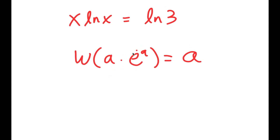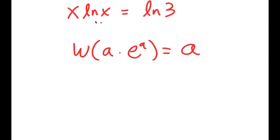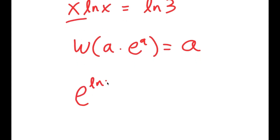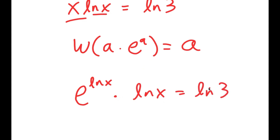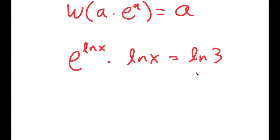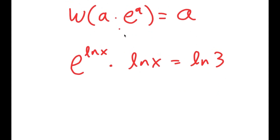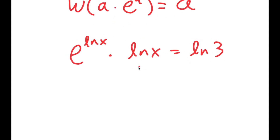In this case, I'm going to rewrite this so that it suits the Lambert W formula — we need to change this to be in the form a times e to the power of a. I'm going to start by rewriting x as e to the power of ln of x, because e to the power of ln cancel out, so x is all that remains. So x is the same thing as e to the power of ln x, and I have this times ln x is equal to ln 3. Notice how this is now in the form a times e to the power of a, with a being ln x. So it's ln x times e to the power of ln x is equal to ln 3.